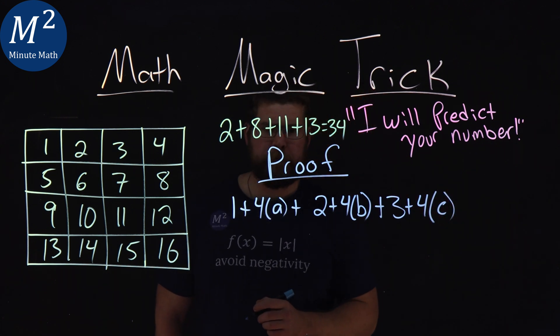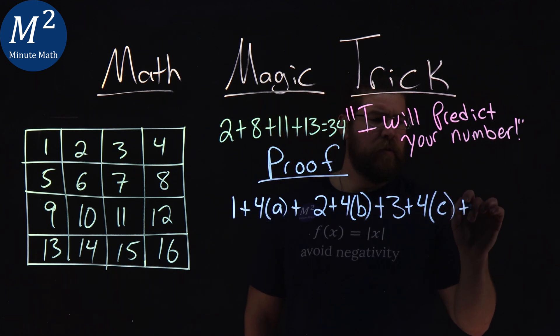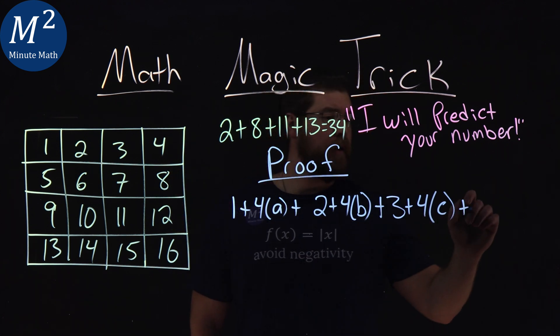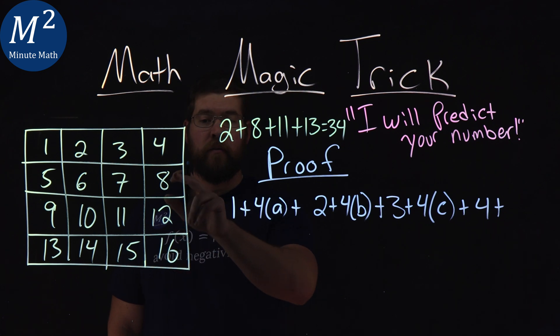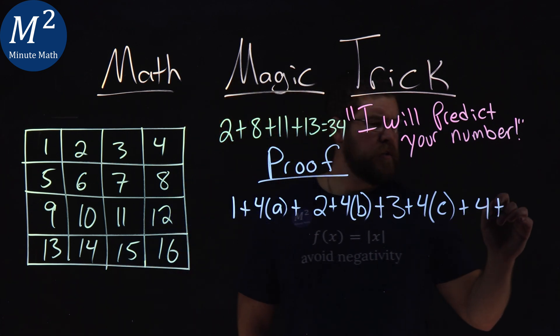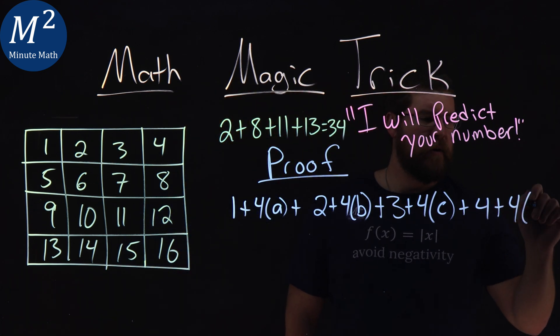Then from there, same thing, we have the fourth column is either four plus four times how many times we go down, either one, two, or three. So we have, again, four times the letter d.